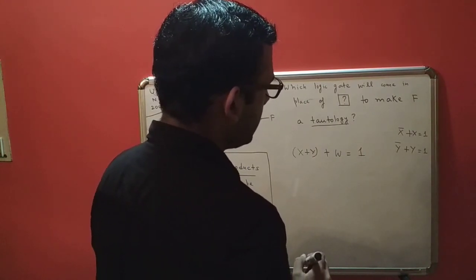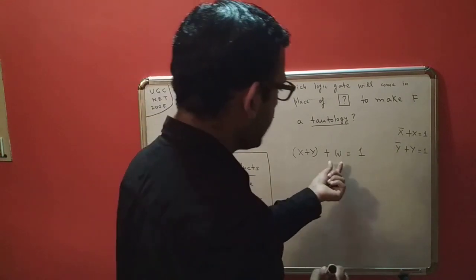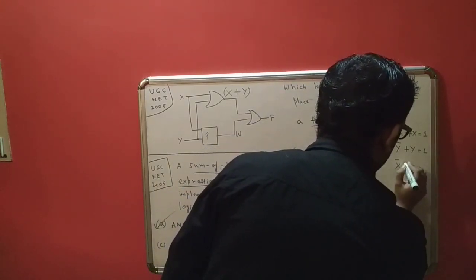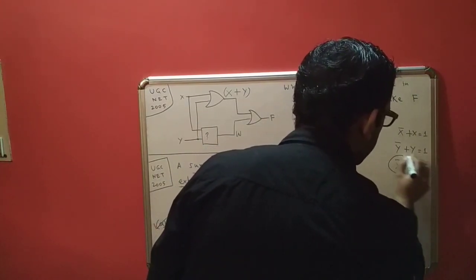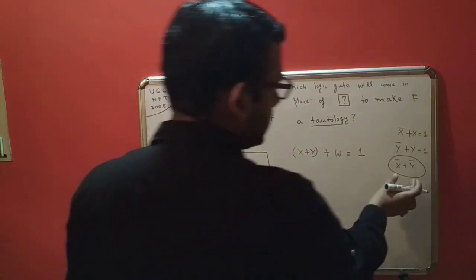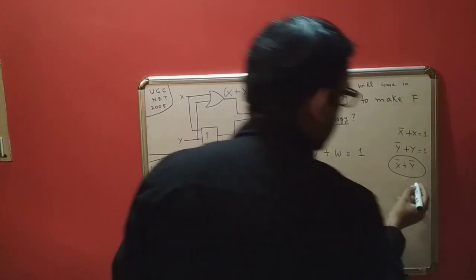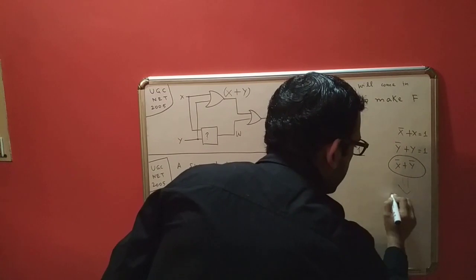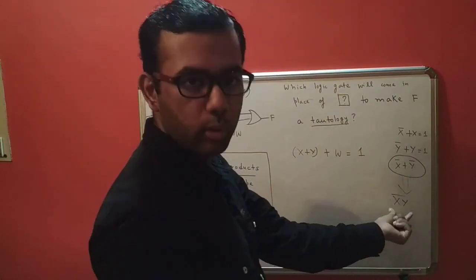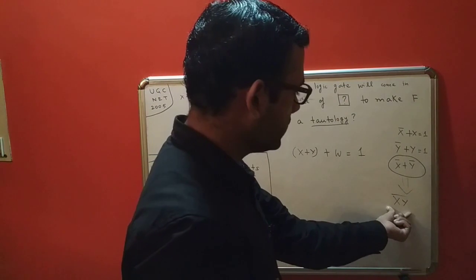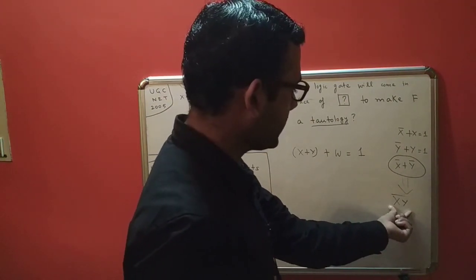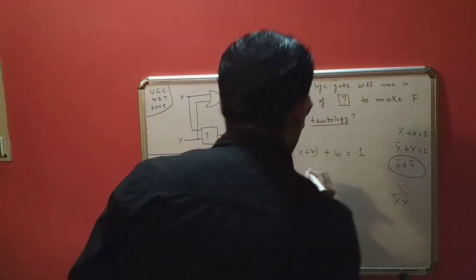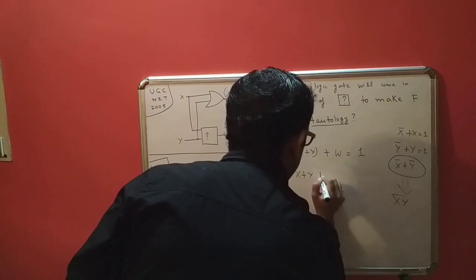So our target is to get x complement OR y complement. Now, x complement OR y complement can be written as (xy)' — the complement of x AND y. Using De Morgan's first theorem, we know that (xy)' gives us x complement OR y complement.